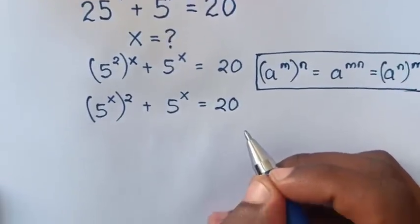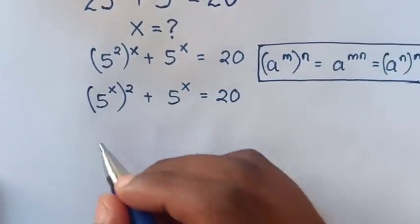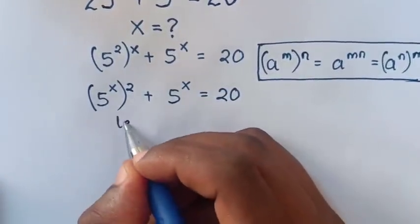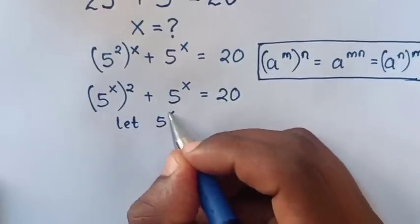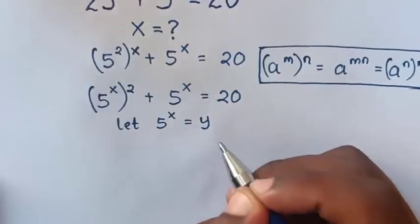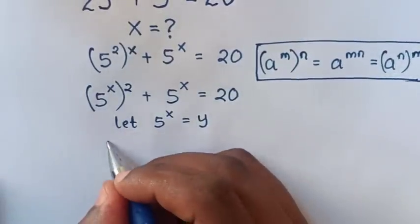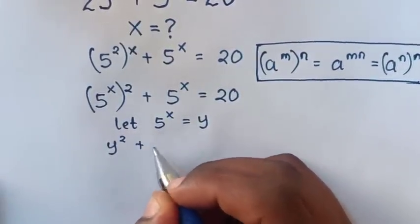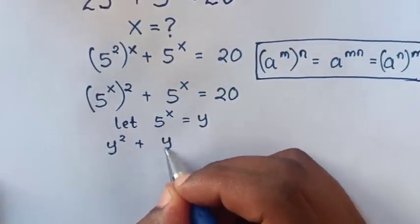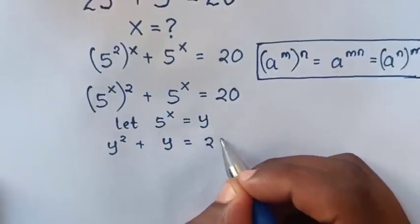Here 5 power x is common, so we let 5 power x equal to y. Then in our question it becomes y squared plus y is equal to 20.